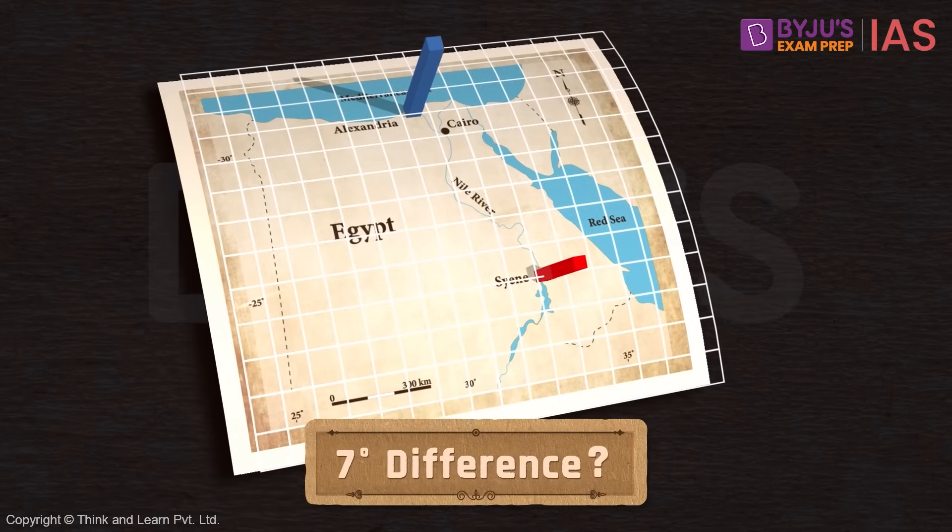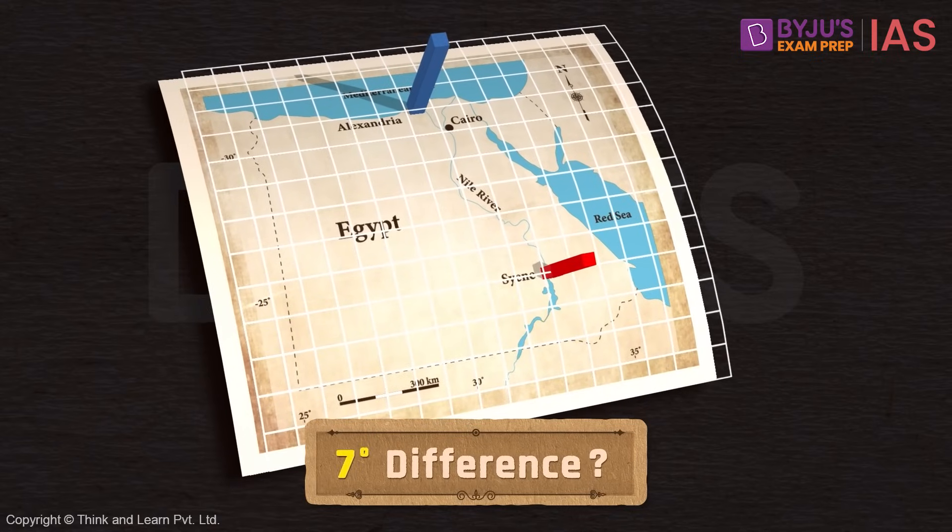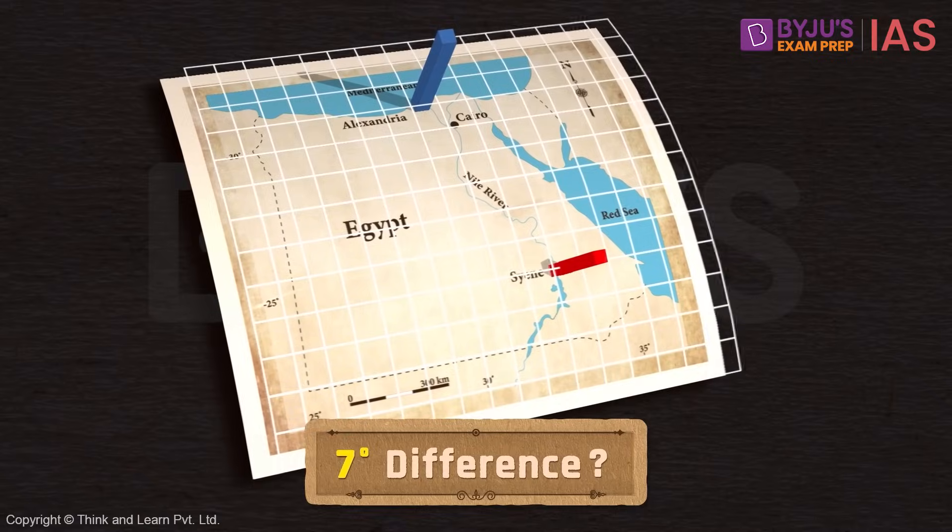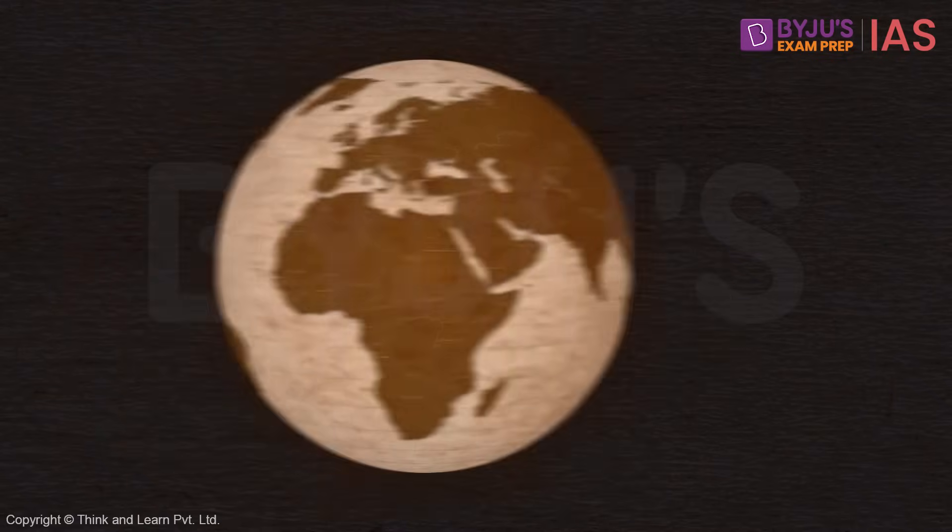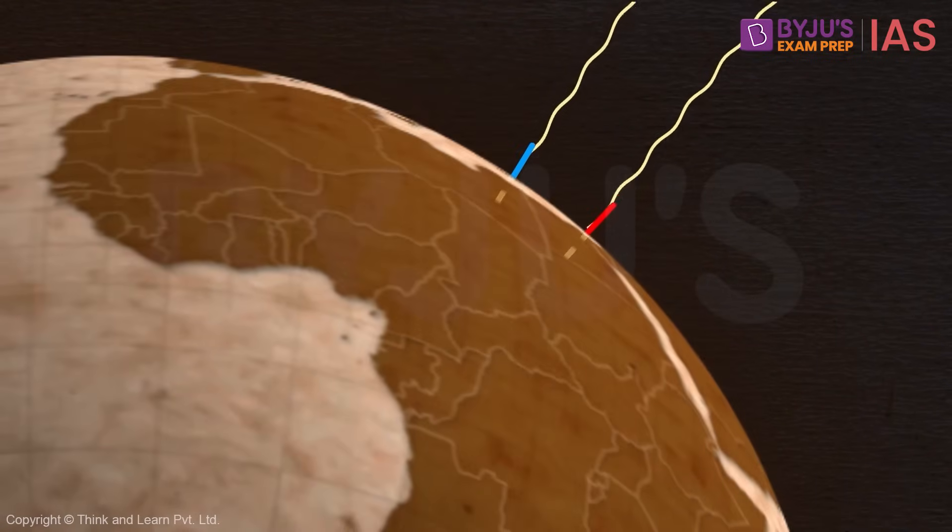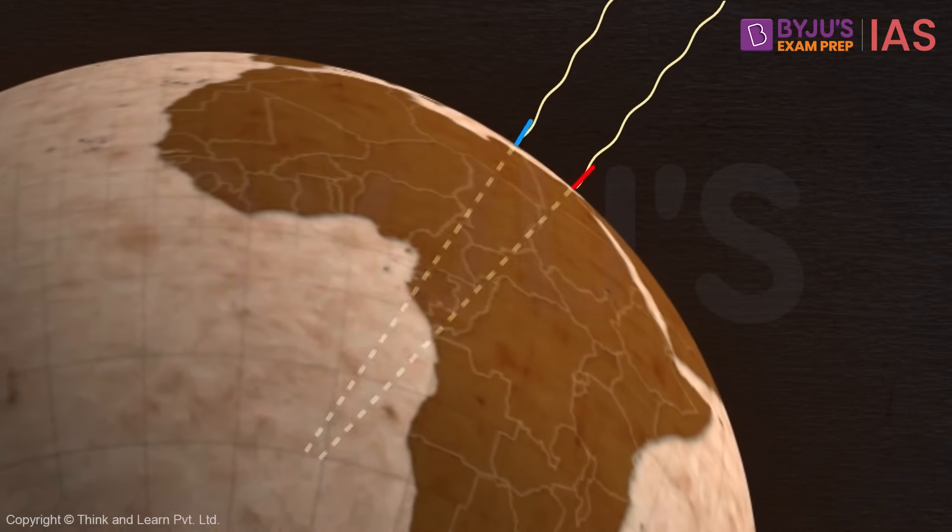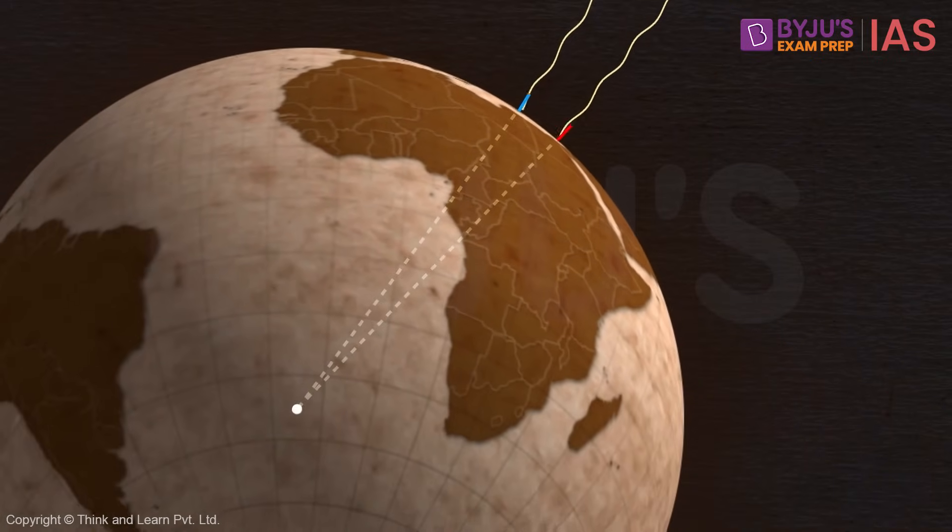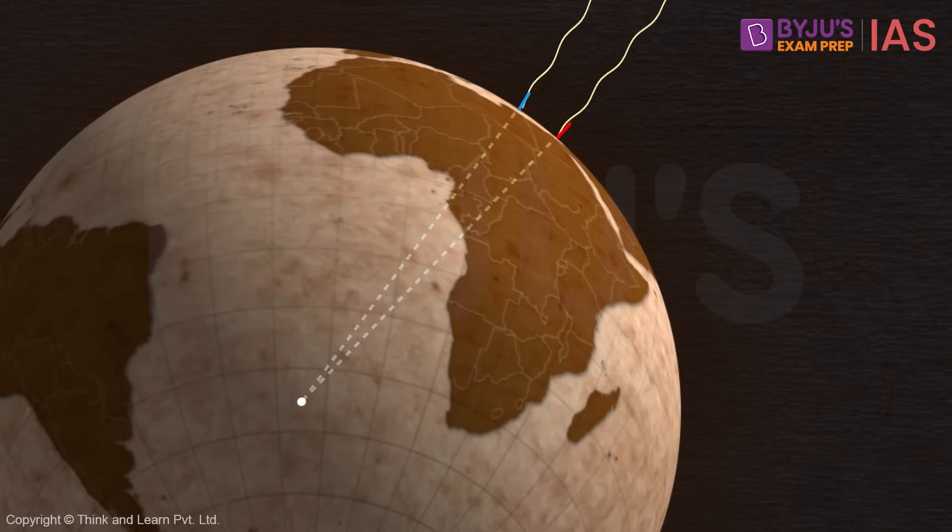Now what is meant by this seven degrees of difference? Well, it means that if I extend the lines passing through these two places till the centre of the Earth, then they will intersect at an angle of seven degrees.